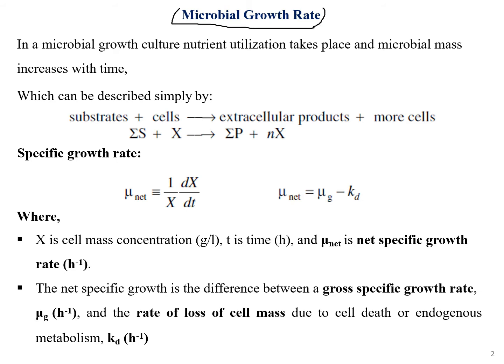In this chapter, we'll understand when microbes grow at the highest rate and the lowest rate, all of its mechanisms, and what its specifics are in growth. In a microbial growth culture, nutrient utilization takes place and microbial mass increases with time. The nutrients or cells we provide get gradually consumed and decreased over time, whereas the microbial mass or product increases with time.